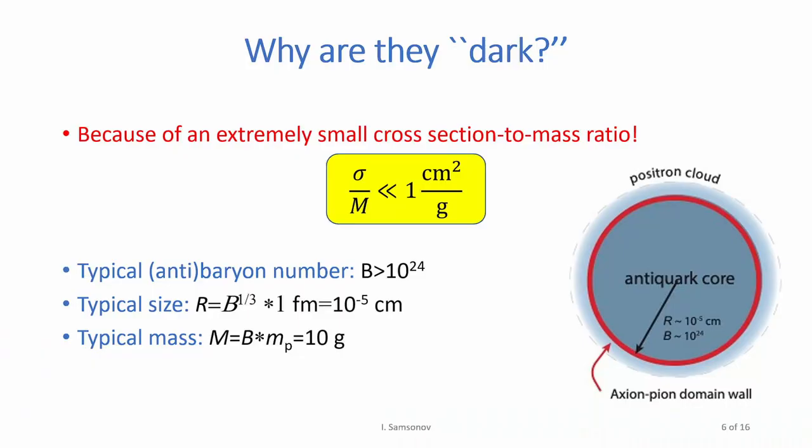The other popular question is why these objects are actually dark. The standard answer is because they have extremely small cross-section to mass ratio. For instance, typical baryonic number, roughly number of quarks or baryons inside these objects, is extremely large - it's 10^24. Typical size of this object is about 10^-5 centimeter. So it's relatively macroscopic, and typical mass may be of order 10 grams. This particle looks like a nanoparticle which has very huge density and relatively large macroscopic mass.